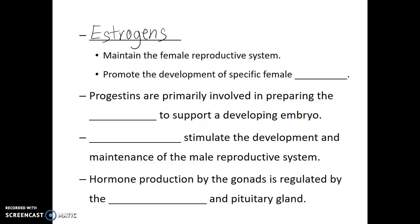Estrogens maintain the female reproductive system and promote the development of specific female features. Progestins are primarily involved in preparing the uterus to support a developing embryo. The androgens stimulate the development and maintenance of the male reproductive system. Hormone production by the gonads is regulated by the hypothalamus and the pituitary glands.